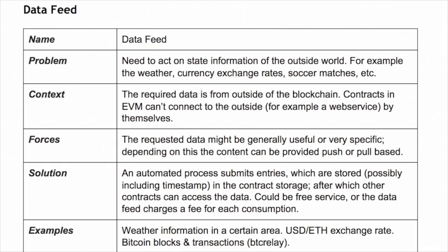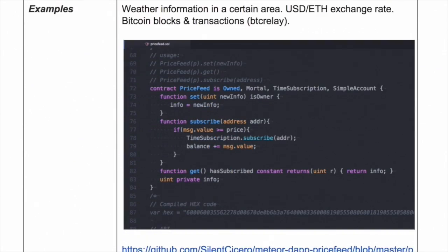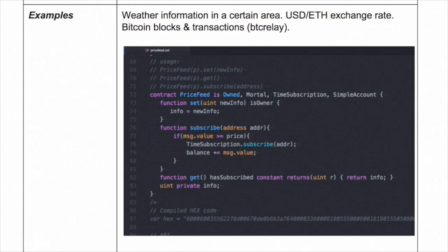A couple of examples we already mentioned: weather and price feeds. The price feed is the most obvious. It looks like we have some code here — I think some of this was actually written in our office back in Palo Alto. I think Nick Dotson wrote it. This is storing the price feed for a certain exchange rate between ETH and another currency. You can update it, but only the owner can do it. And you can get the latest information.